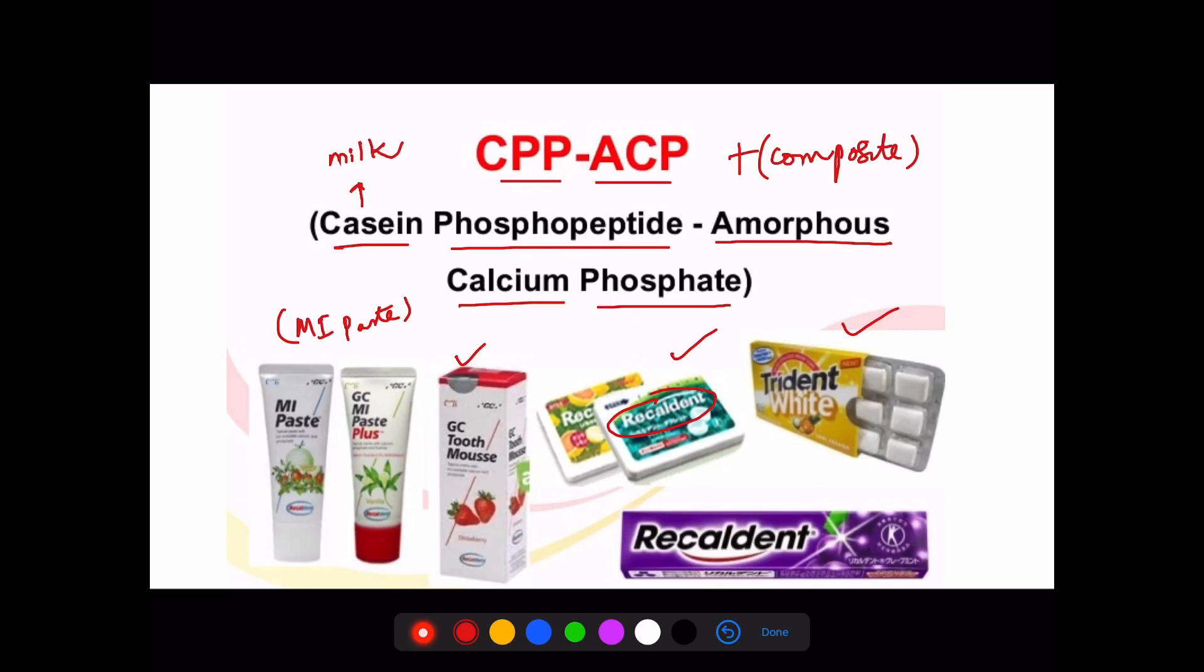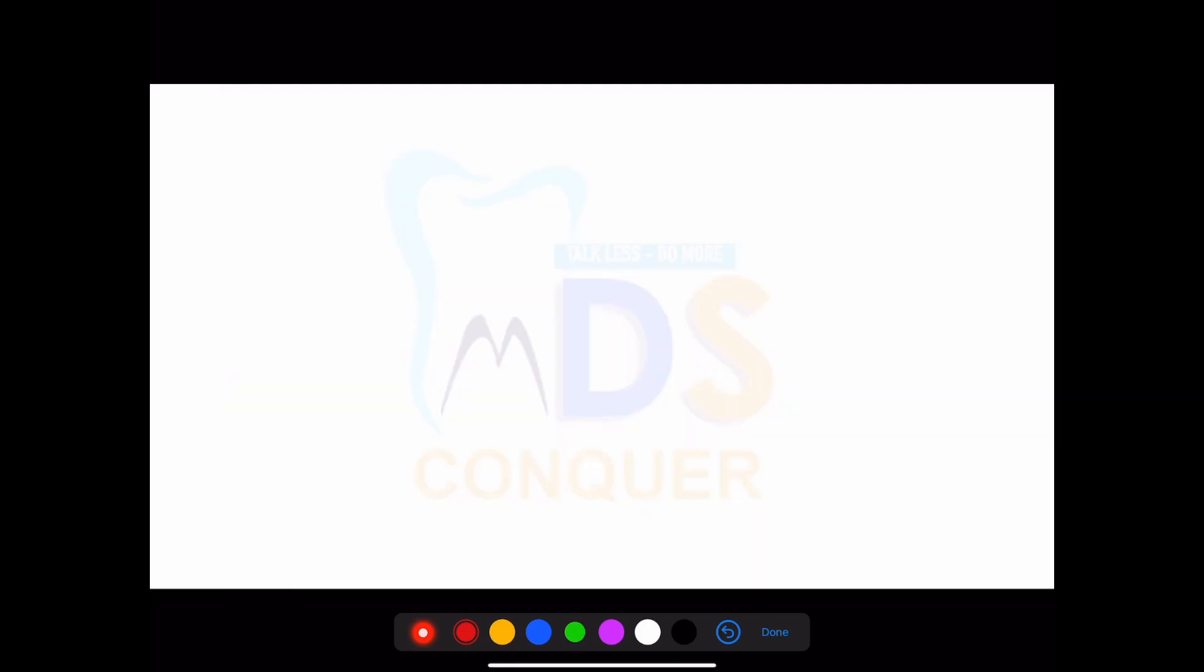What is this Casein Phosphopeptide Amorphous Calcium Phosphate? The very important things to note: it is basically derived from protein. The wording is very important. It is a nanotechnology related protein and it is developed from the University of Melbourne. These are very commonly asked questions.